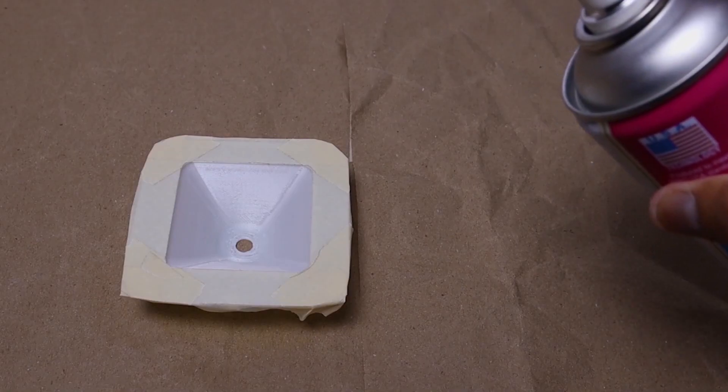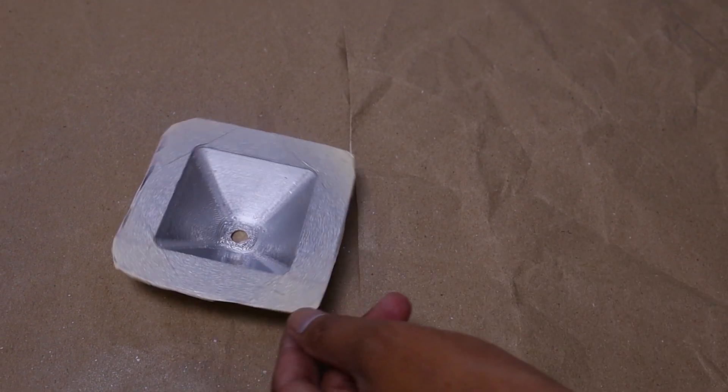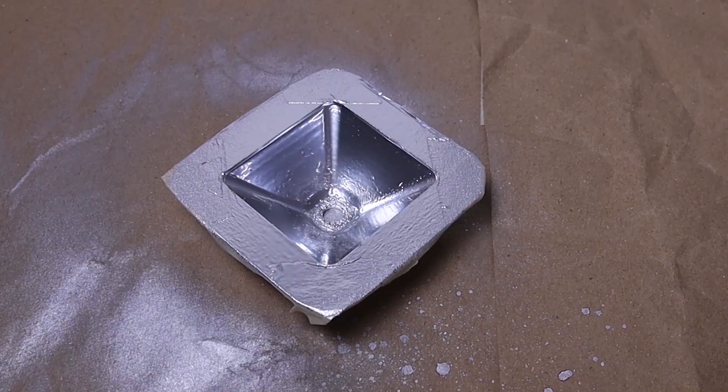Now I am going to apply a coat of bright chrome spray paint on the front reflector part. Leave it 4-5 hours to dry it completely.